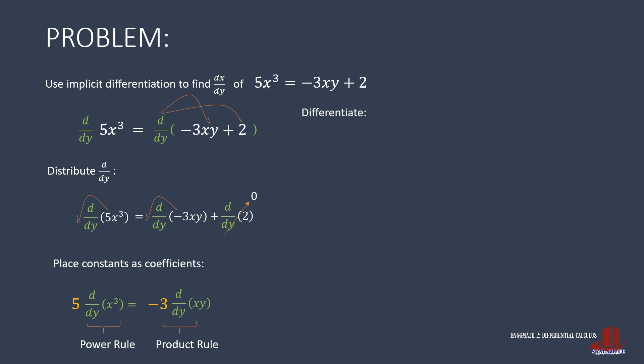Differentiating the first term, we get a constant 5 with 3x squared. This is the derivative of x cubed, followed by dx over dy. On the other side, there is negative 3 times the product rule stating the first term x times the derivative of the second term y, plus the second term y, with the derivative of the first term x.